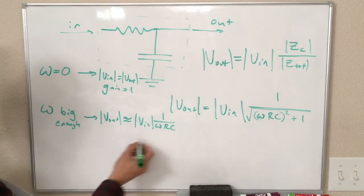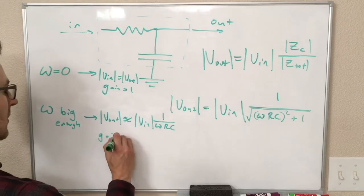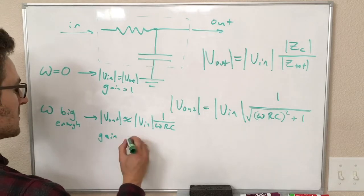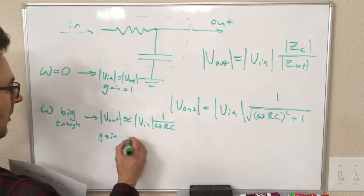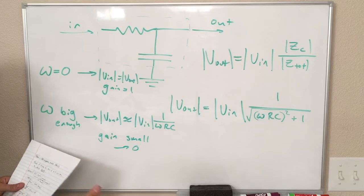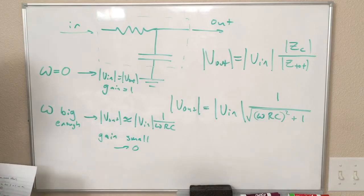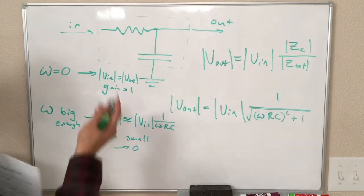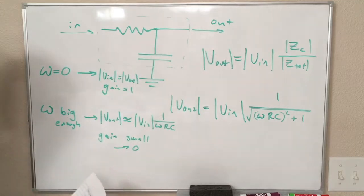In that case, Vout is approximately equal to Vin times 1 over omega RC. If omega is big, and this omega RC term is much, much bigger than 1, then Vout is going to be only a tiny fraction of Vin. In other words, the gain approaches zero, or the gain is at least small. It goes to zero if omega is bigger and bigger. Which means at high frequency inputs, we do not get an output, or we get a very, very small output.